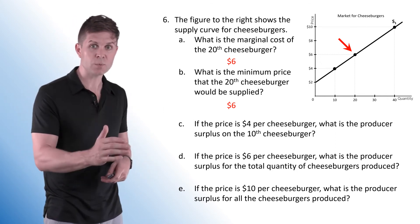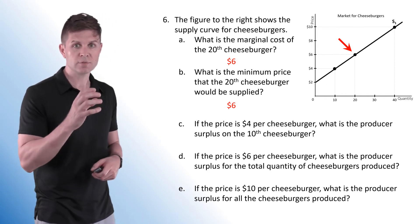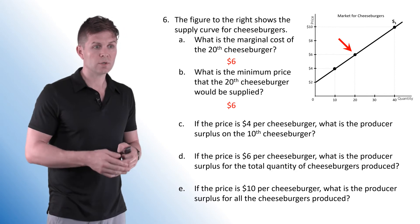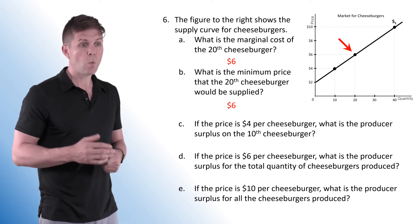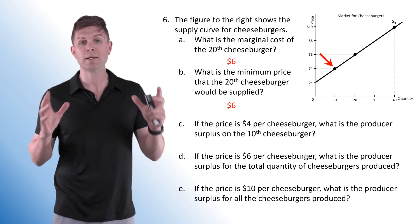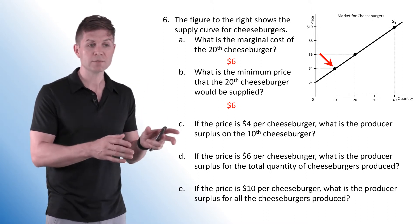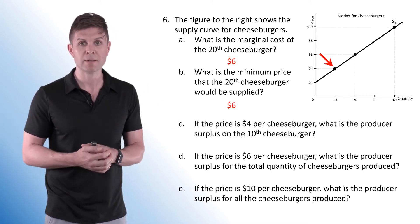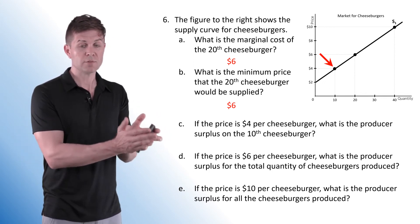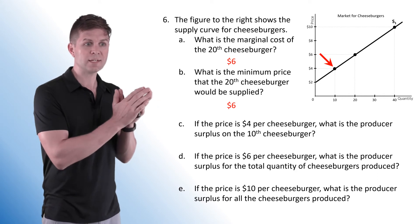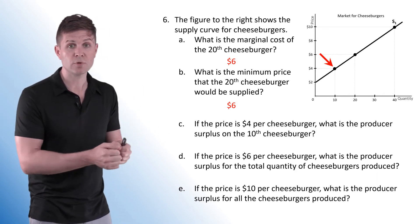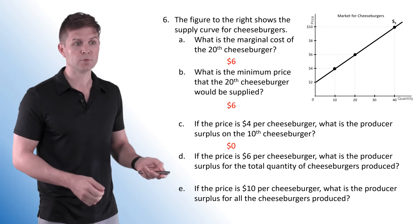For C: if the price is $4 per cheeseburger, what is the producer surplus on the 10th cheeseburger? At $4, 10 cheeseburgers are being supplied, so the marginal seller is bringing in that 10th cheeseburger. His marginal cost is $4 — he is getting zero extra satisfaction and zero producer surplus on this particular cheeseburger.